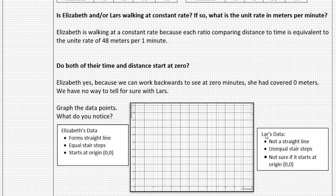So here are some of the bullet points that we noticed in our graph. Elizabeth's data formed a straight line, had equal stair steps that showed us the unit rate, and started at the origin. Where Lars's data was not a straight line, therefore had unequal stair steps, couldn't find a unit rate, and we're not sure that it started at zero, zero.